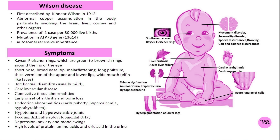This may include urgent chelation therapy and possibly liver transplantation. A liver transplant is the only definitive treatment for the hepatic manifestation of Wilson disease. Once the transplant is performed, copper accumulation is largely resolved and the transplanted liver takes over copper metabolism.